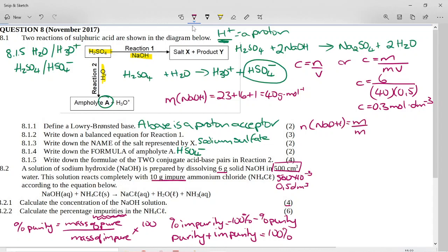And so that's mass over molar mass. So this is 6 over, remember we calculated the molar mass to be 40. So 6 over 40 is 0.15 moles. So we had 0.15 moles of sodium hydroxide.